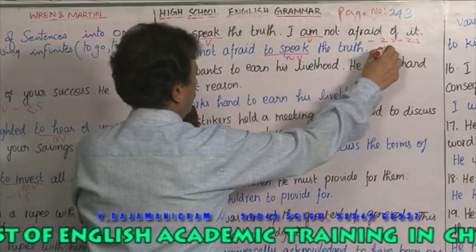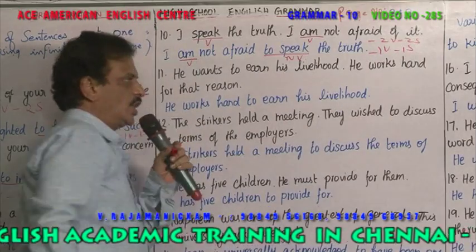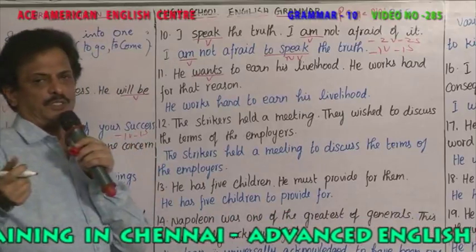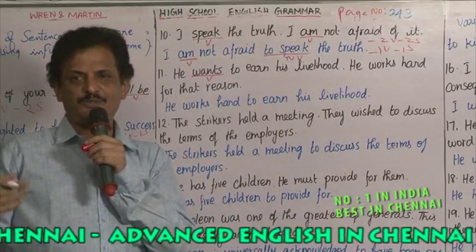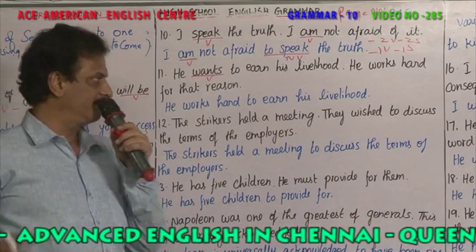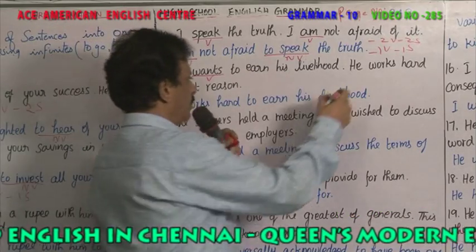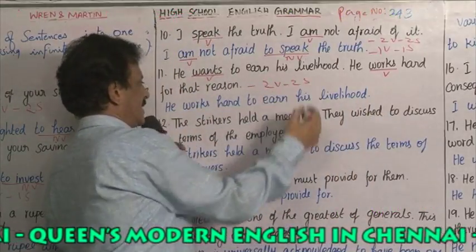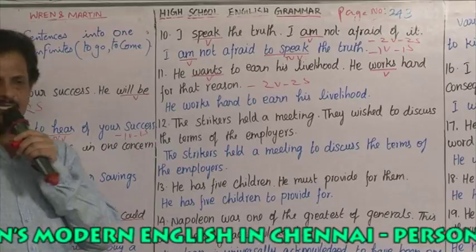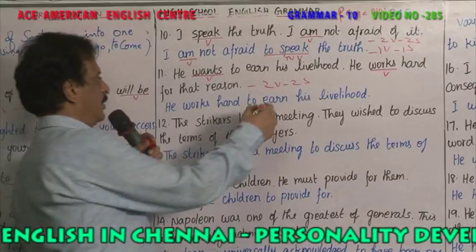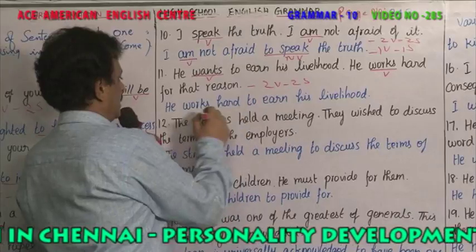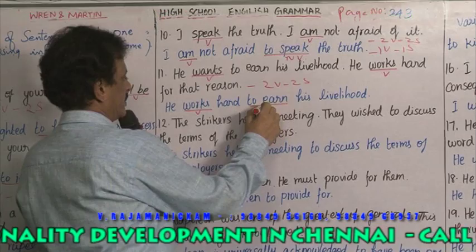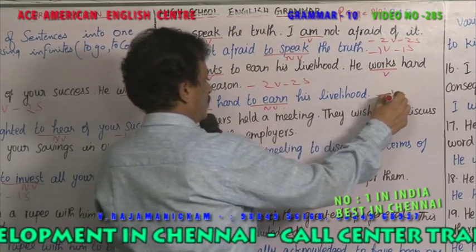Example 6: 'He wants to earn his livelihood' — 'wants' is the verb. Livelihood means the daily earnings needed to live. 'He works hard' — 'works' is the verb. Two verbs, two sentences. Combined: 'He works hard to earn his livelihood.' 'To earn' is an infinitive, not a verb. One verb, one sentence.